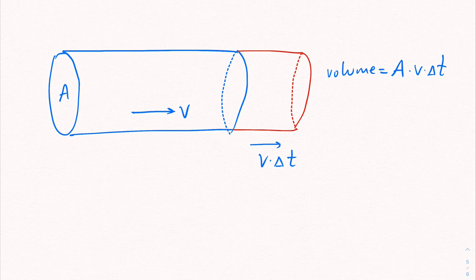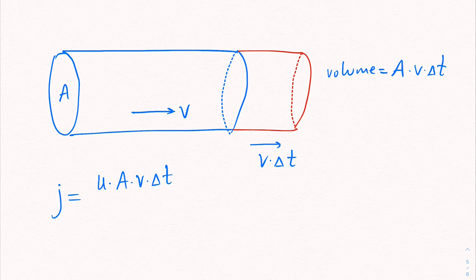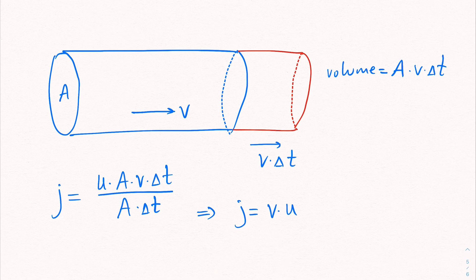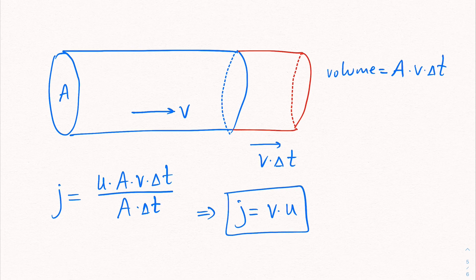Now, if we multiply the volume with the density, we are going to get the number of particles. And if we want to find the flux, we can basically write down the density times the volume number of particles. This is number of particles divided by the area and time. This gives you a nice relationship between j and u when everything moves in the same direction.